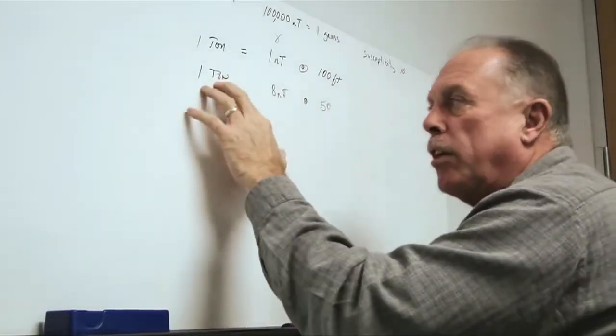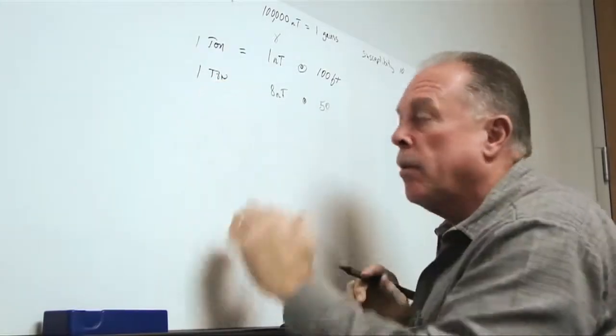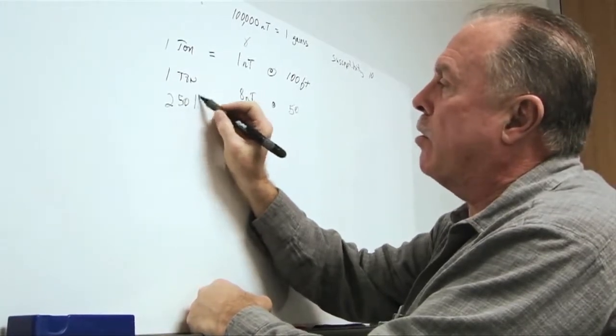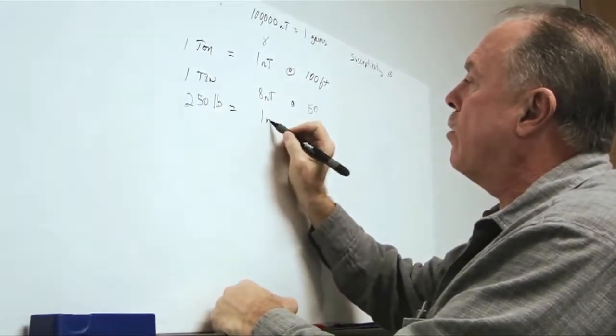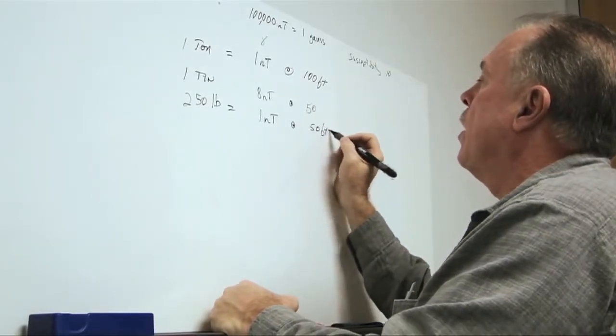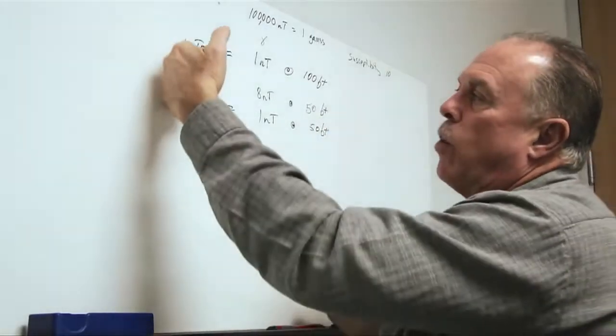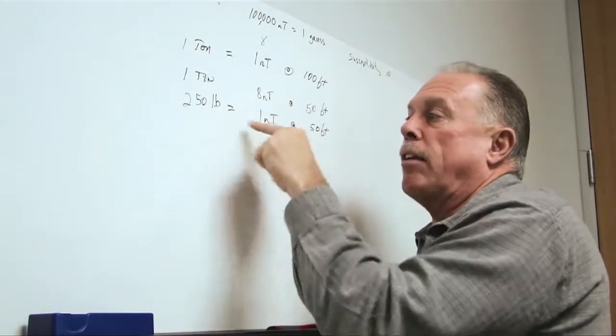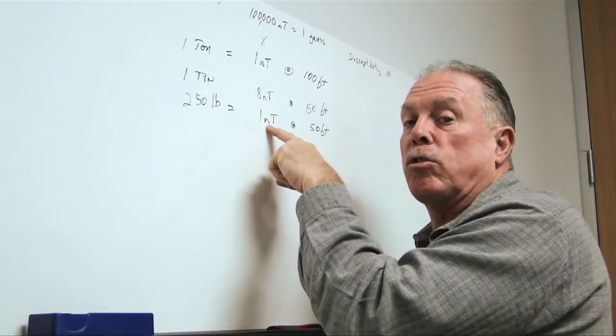But because it's linear with mass, we can also write this a different way. And that would be that 250 pounds equals one nanotesla at 50 feet. Because, you see, we have taken one ton and cut it down by a factor of eight, and it's linear with mass, so we're seeing a one nanotesla distortion.